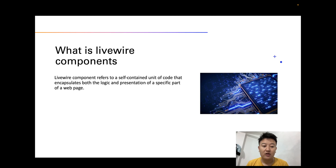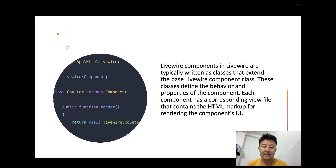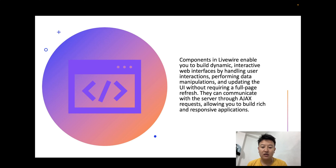Livewire components in Laravel are typically written as classes that extend the base component. These classes define the behavior and properties of the component. Each component has a corresponding view file that contains the HTML markup for rendering the component's UI. Here in the picture we can see the class 'Counter' that is extending from the base component class.